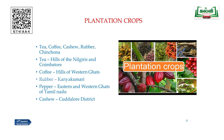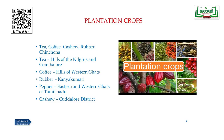Next, we learn about plantation crops: tea, coffee, cashew, rubber and cinchona. Tea is grown in the hills of the Nilgiris and Coimbatore. Coffee is grown in the hills of the Western Ghats. Rubber is grown in the district of Kanyakumari. Pepper is grown in the Eastern and Western Ghats of Tamil Nadu — it is very precious and has medicinal properties. Cashew is available only in the district of Cuddalore.